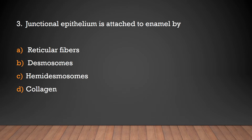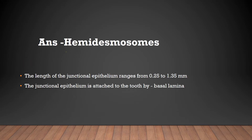Junctional epithelium is attached to enamel by: reticular fibers, desmosomes, hemidesmosomes, or collagen? The answer is hemidesmosomes. Junctional epithelium is attached to enamel by hemidesmosomes. The length of junctional epithelium ranges from 0.25 to 1.35 mm. Junctional epithelium is attached to the tooth by basal lamina.